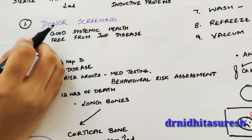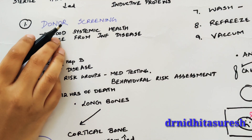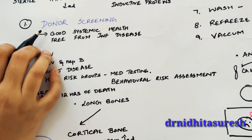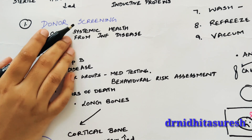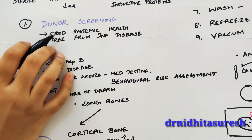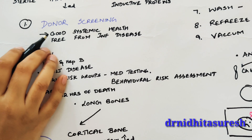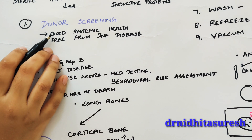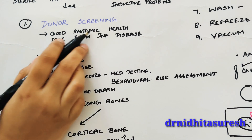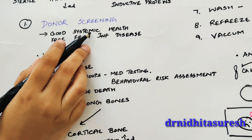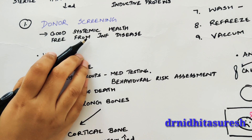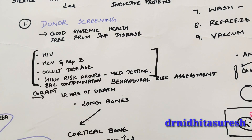The first step in procuring allografts is donor screening. We must verify that the donor had good systemic health and was free from any infectious disease or malignancies.